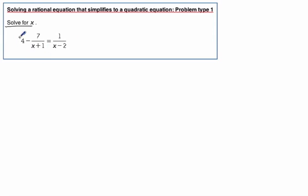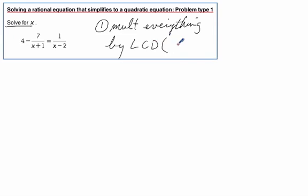So what do we do whenever we have fractions in an equation? Well the easy way is of course to multiply everything by the least common denominator. What that does is it gets rid of fractions. So these are some good notes you might want to write here.